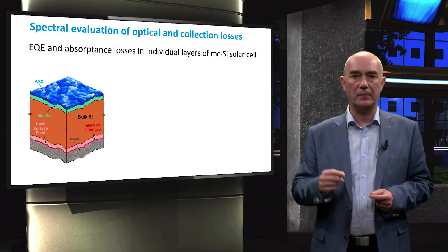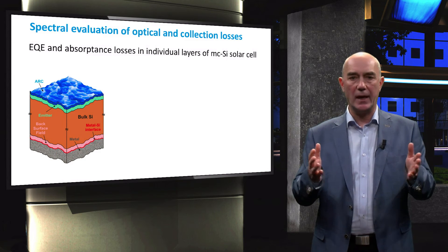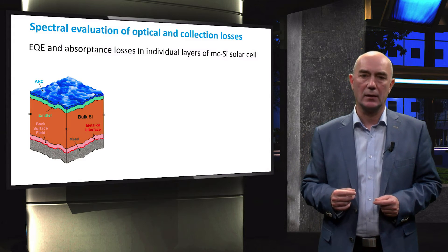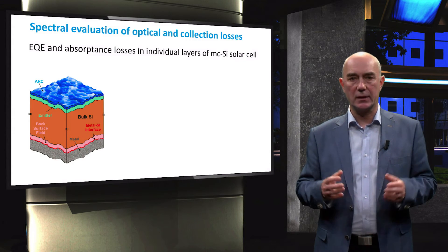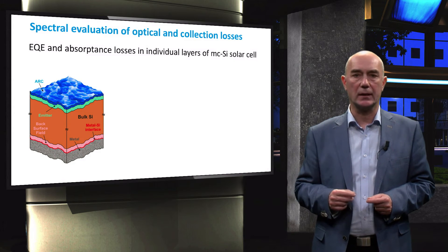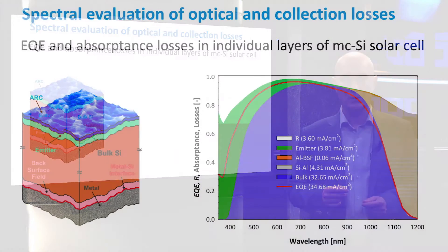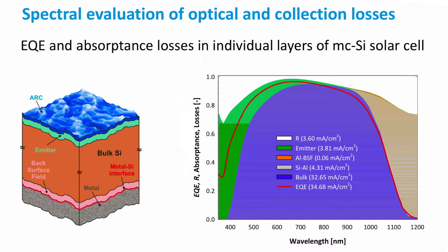Understanding and quantifying the optical and electrical losses is crucial to enhance the conversion efficiency of a solar cell. Performing optical simulations can provide more insight about these losses. The graph illustrates the total reflectance and absorptance of all individual layers of a multi-crystalline silicon solar cell. The white area represents the total reflectance, which is one of the major losses, and the colored areas between the white area and the red EQE line represent the parasitic absorptance within the cell.